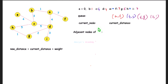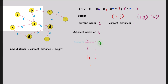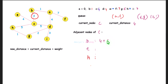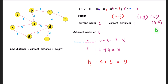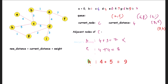Remove node C from the queue with distance 4. Find adjacent nodes of C: B and E and H. New distance to B: 4 + 3 = 7 — skip since B's distance is 1. New distance to E: 4 + 4 = 8 — 8 is less than infinity, so update E to 8 and add (8, E). For H: 4 + 5 = 9 — update H to 9 and add (9, H). Compare and update as needed.